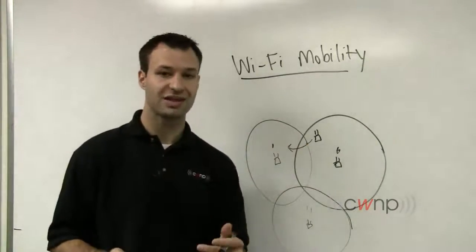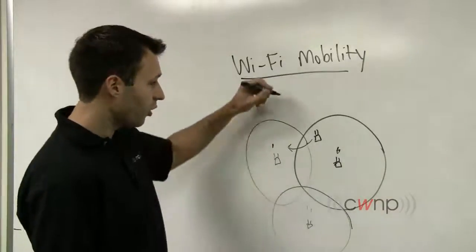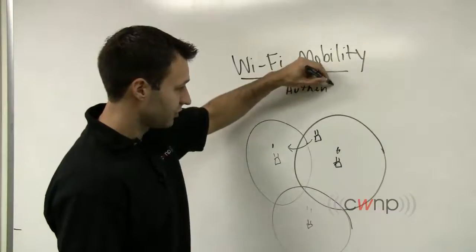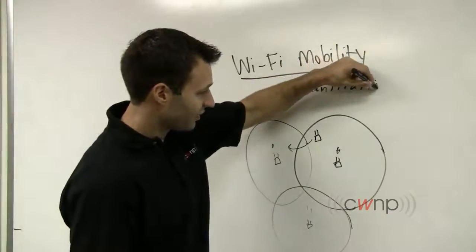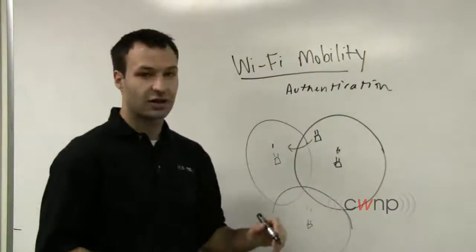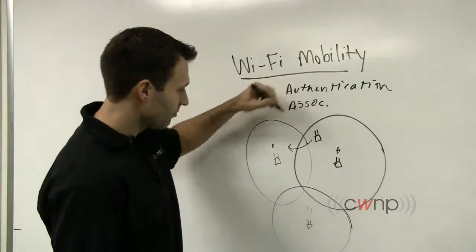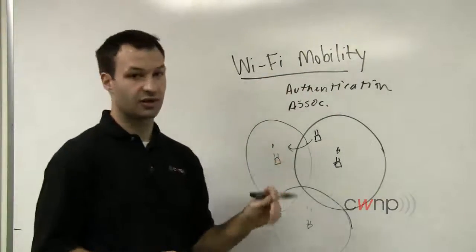If you remember the video that we did on the state machine, this access point always has to go through at least an open system authentication and an 802.11 association. I'll just abbreviate that one here. But it always has to do at least these two things.